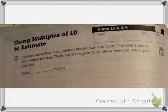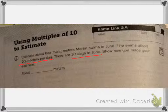Estimate how many meters Martin swims in June if he swims about 200 meters a day. So let's underline that — 200 meters a day. And there are 30 days in June. Show how you made your estimate.